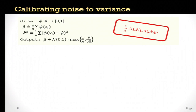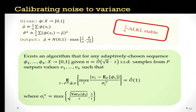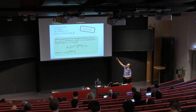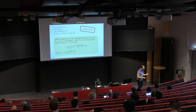Combining the stability properties of calibrated noise addition with generalization guarantees and adaptive composition, they get an algorithm which answers statistical queries with error roughly proportional to their standard deviation. The expectation of the worst-case error over all queries, when scaled by roughly the standard deviation with a second-order correction, will be small. The calibrated noise addition algorithm was the motivating application for this notion and brings all the pieces together.